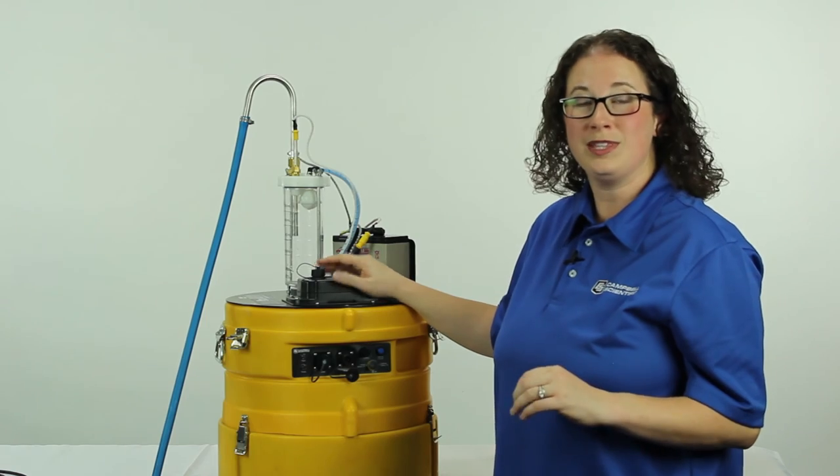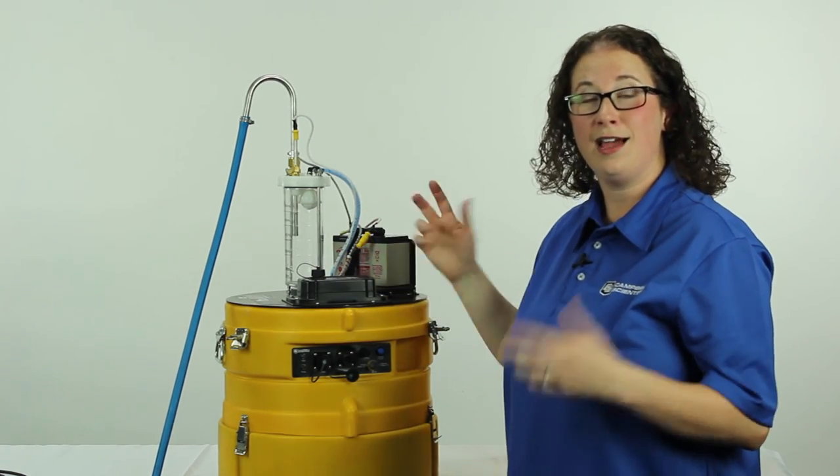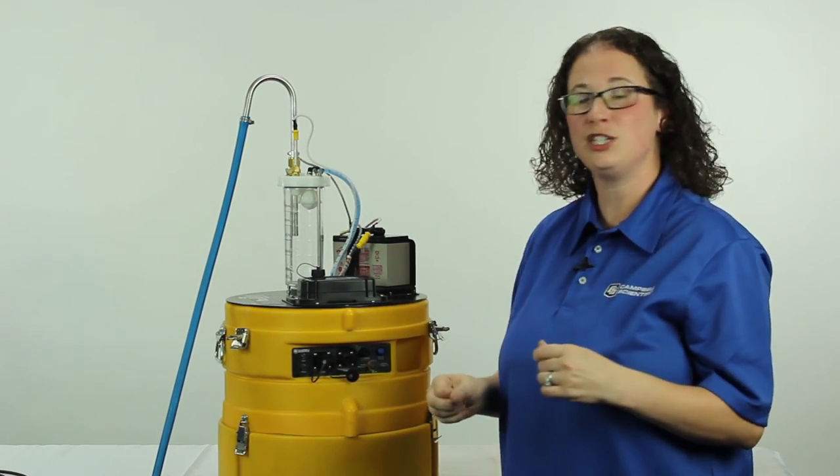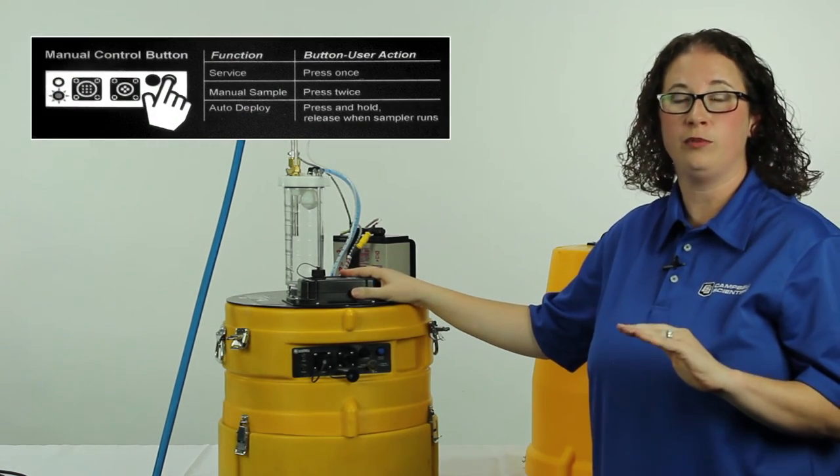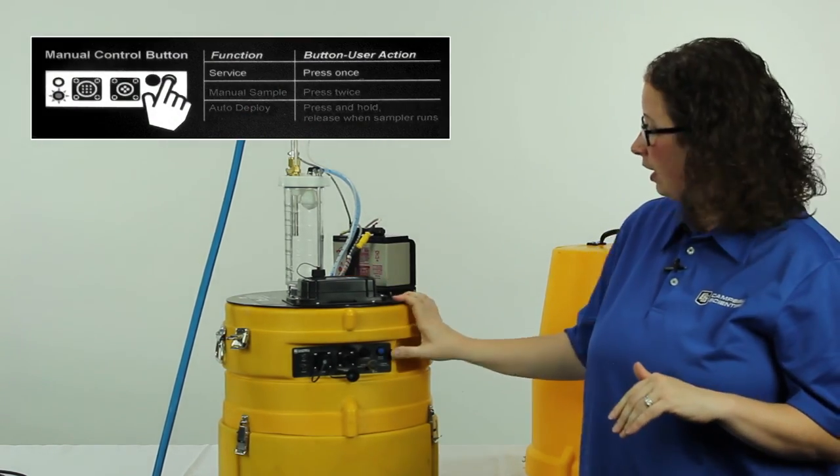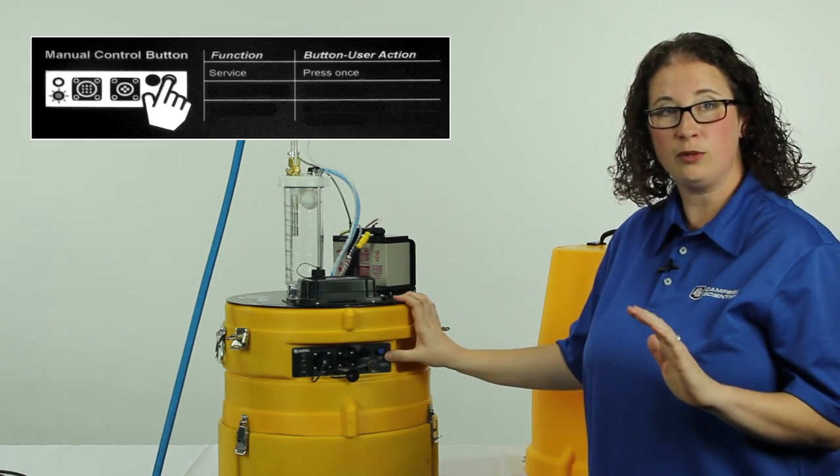We've emptied our bottles, but the sampler still thinks I'm on bottle number two, so we need to use another function for the manual control button, which is servicing the sampler. By pushing and releasing the manual control button, you tell the sampler it's empty and to go back to spot one.